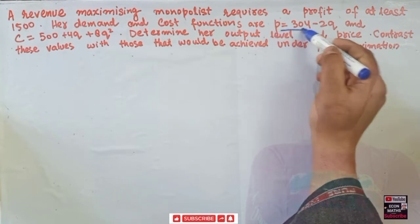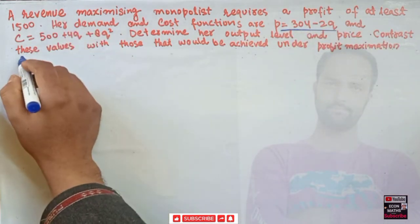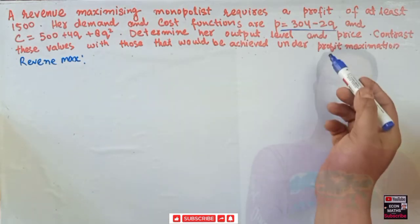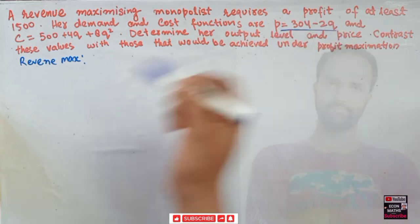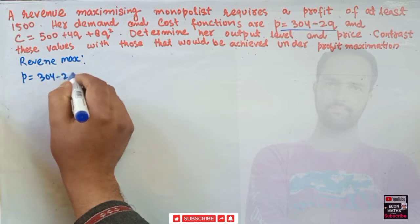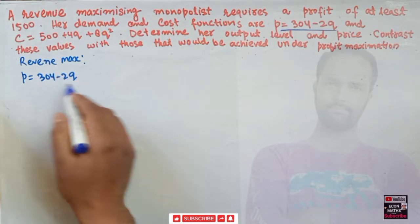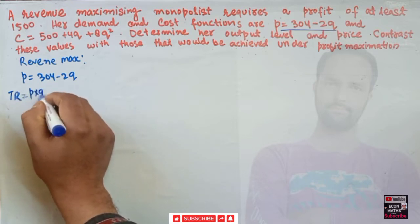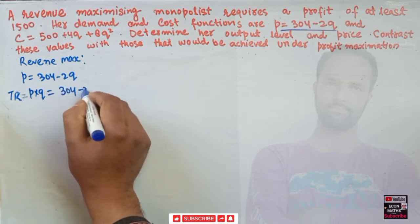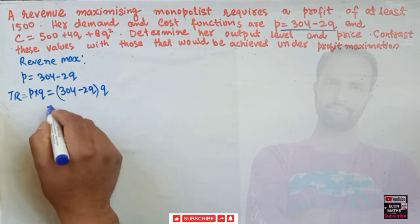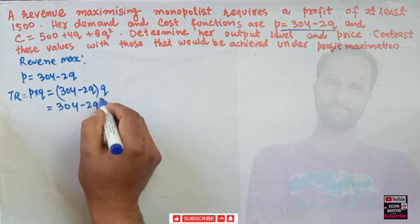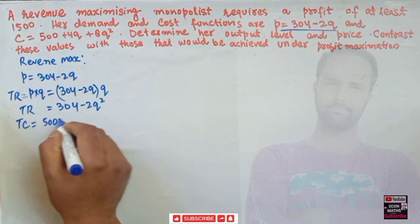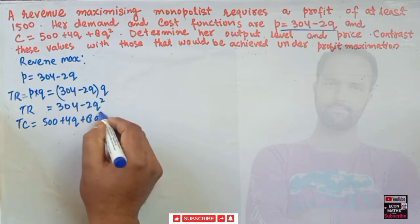For revenue maximization, we start with the demand function: p = 304 − 2q. Total revenue is price times quantity, so TR = (304 − 2q)·q = 304q − 2q². The total cost function is given as TC = 500 + 4q + 8q².